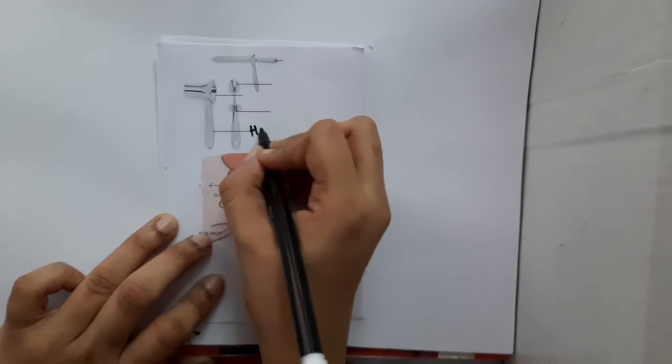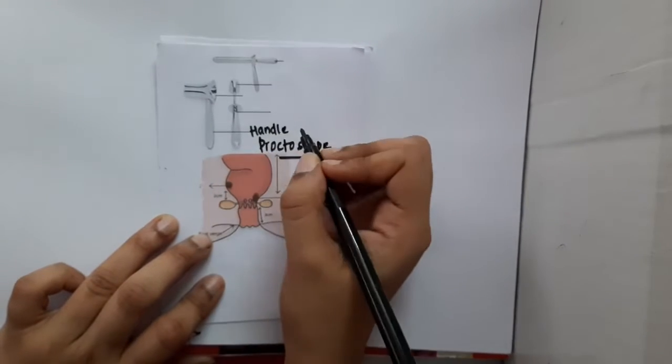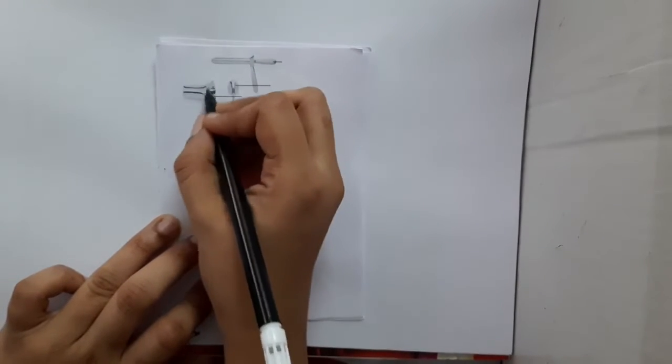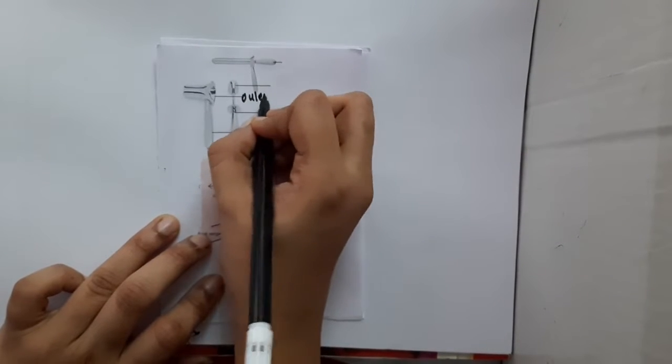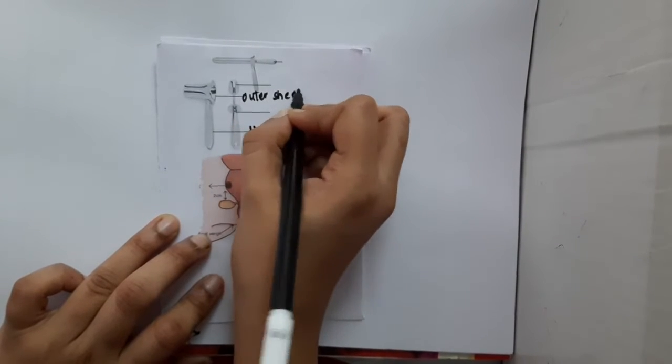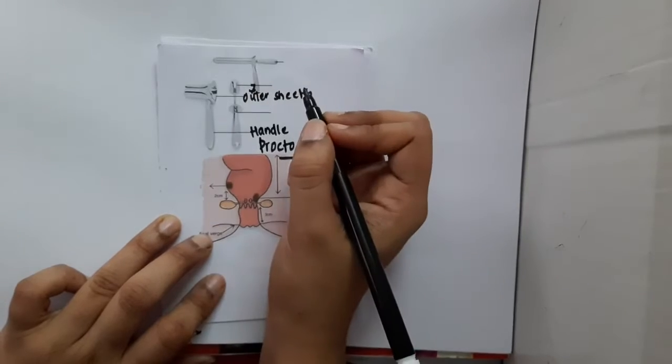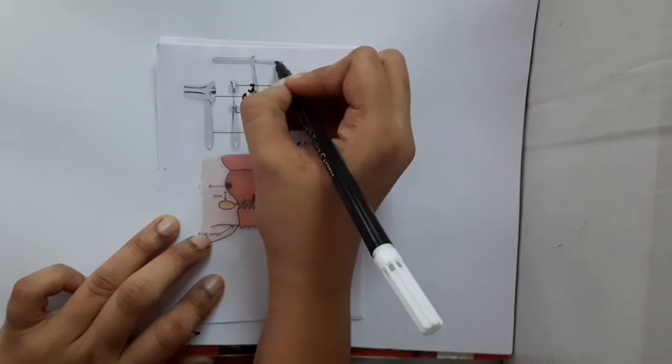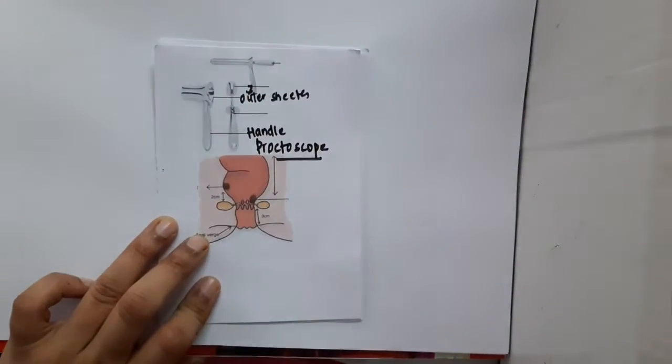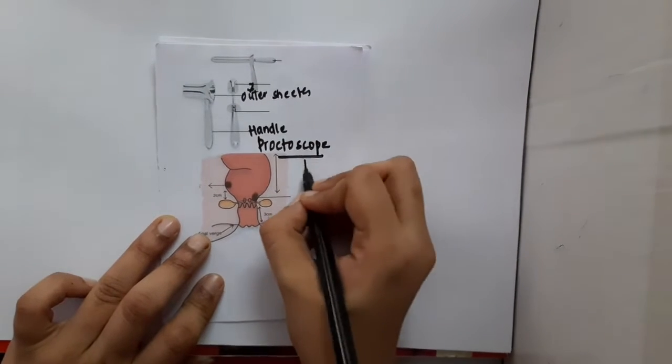See, this is the handle. This outer part is called the outer sheath, which is nothing but the outer sheet, and you will have this smooth and round part. Now, what is the length of the proctoscope?